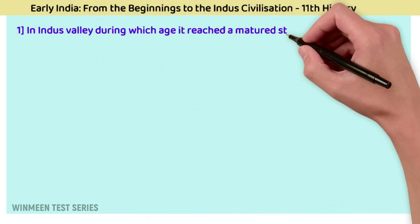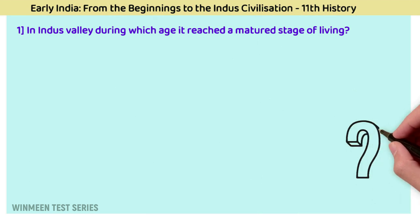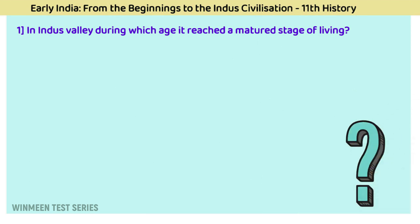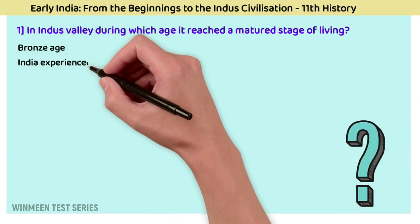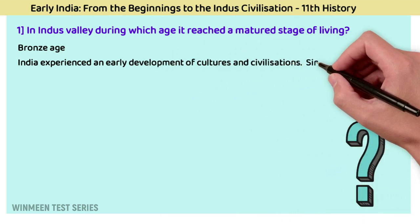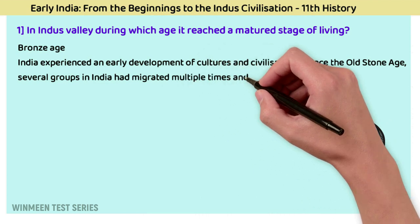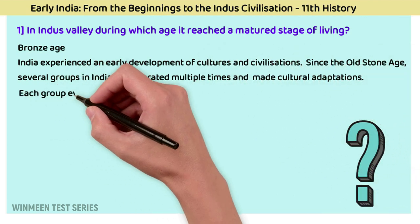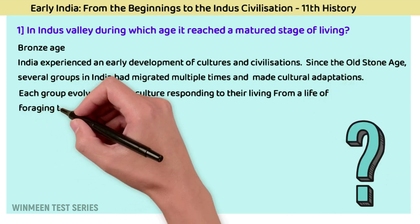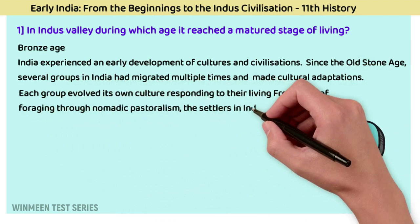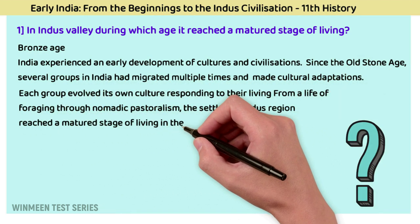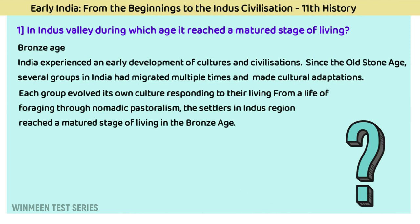Question 1: During which age did the Indus Valley reach a mature stage of living? The answer is the Bronze Age. India experienced early development of cultures and civilizations. Since the Old Stone Age, several groups in India had migrated multiple times and made cultural adaptations. Each group evolved its own culture, moving from foraging through nomadic pastoralism, and settlers in the Indus region reached a mature stage of living in the Bronze Age.